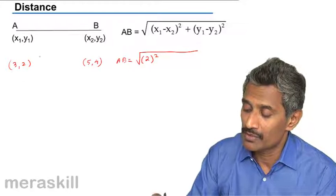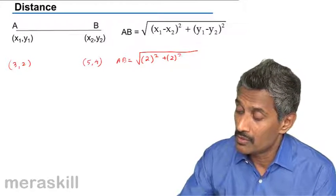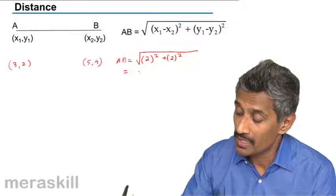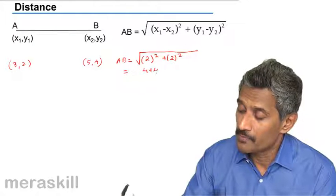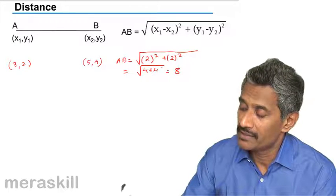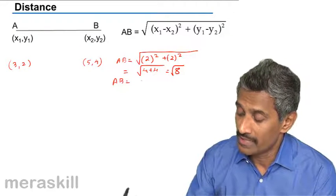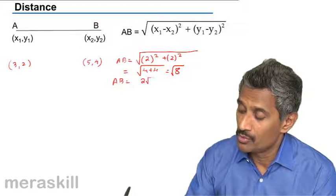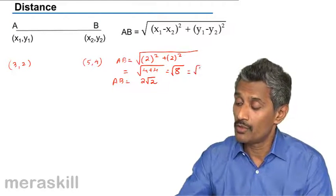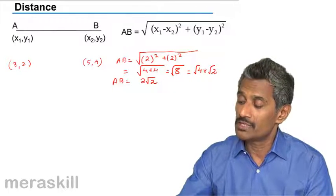That is x2 minus x1 the whole square plus y2 minus y1 the whole square, plus 2 the whole square, which will turn out to be 4 plus 4, that is 8. In that case, AB will turn out to be root 8, so AB is going to be 2 root 2.